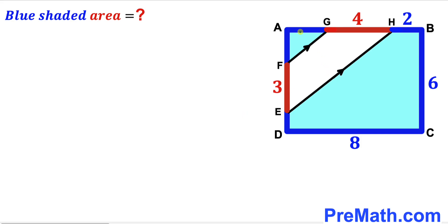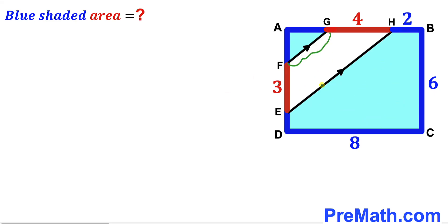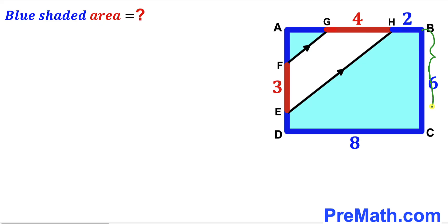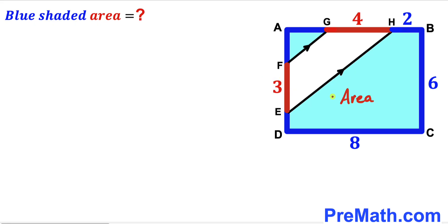Welcome to Pre-Math. In this video we have rectangle ABCD along with two parallel lines FG and EH, as shown in the diagram. This results in a blue shaded region. The length of the rectangle is 8 units, the width is 6 units. The segment HB is 2 units, the red segment GH is 4 units, and the red segment EF is 3 units. Our task is to calculate the area of the blue shaded region combined.